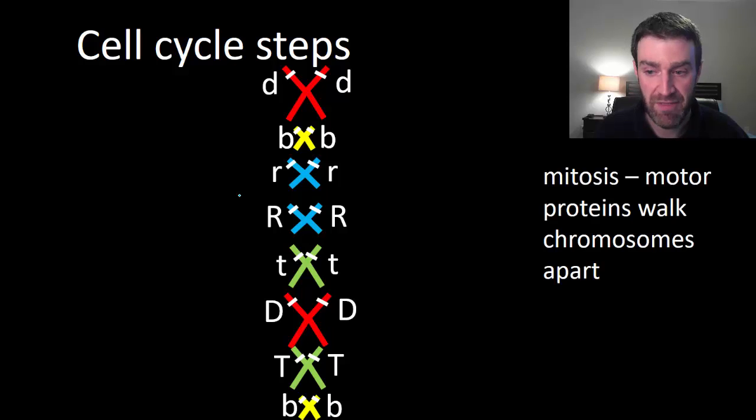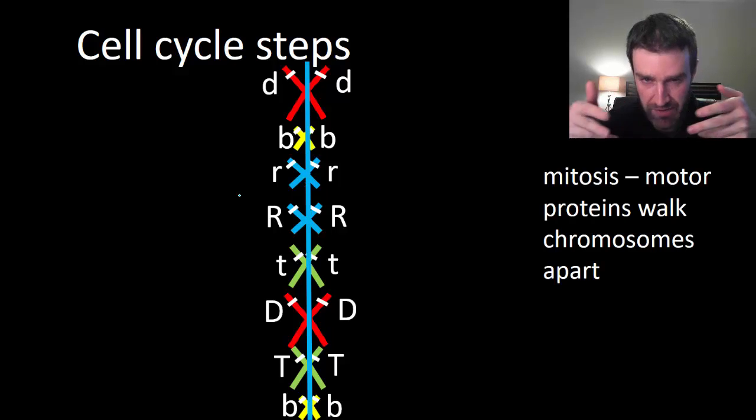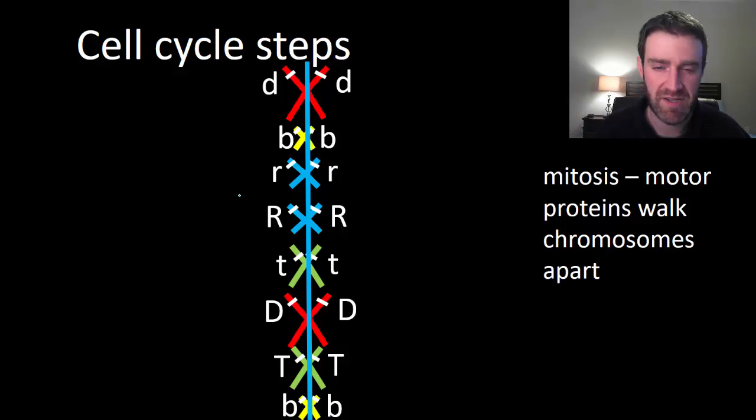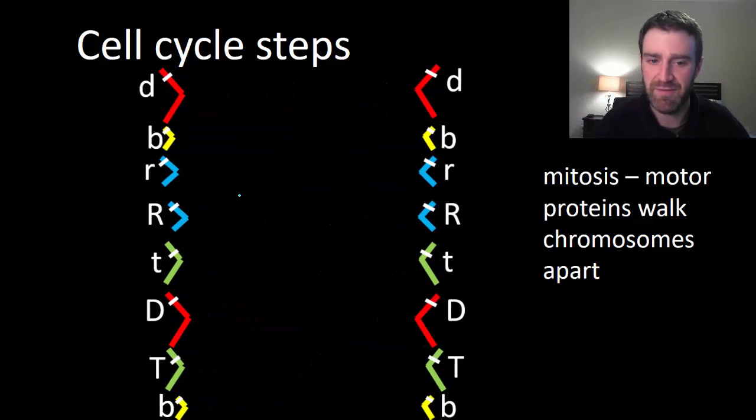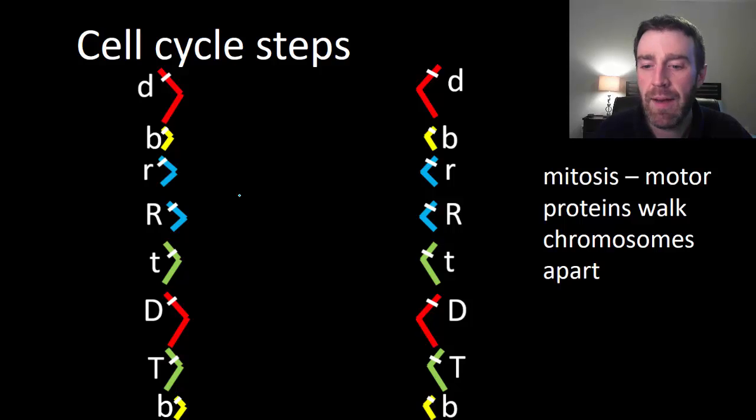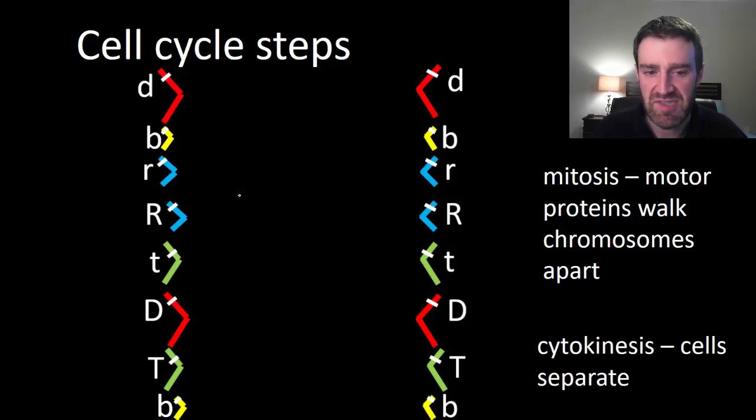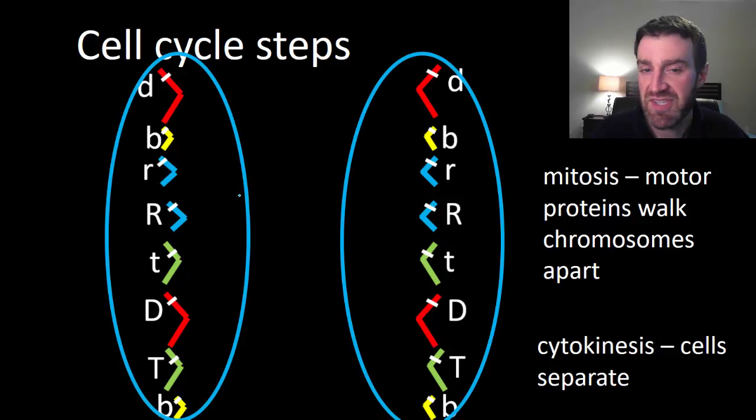The motor proteins actually walk the chromatin, the chromosomes apart. You don't actually pull them apart from the poles of the cell. Once you walk them apart sufficiently they should be unpacking to chromatin form, which I'm not going to show here. The nucleus actually reforms, which I'm not showing here either. And in cytokinesis you eventually split up that one cell into two separate cells.